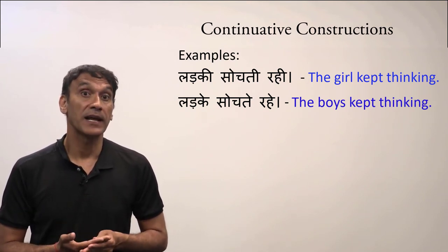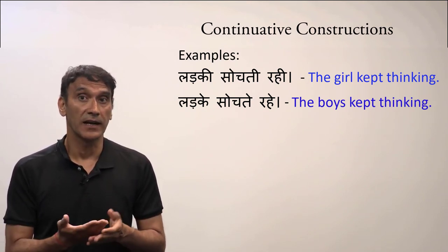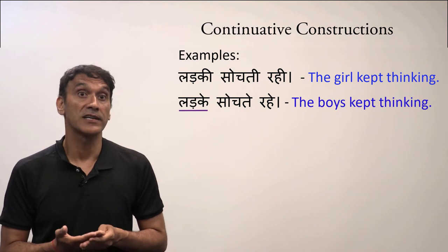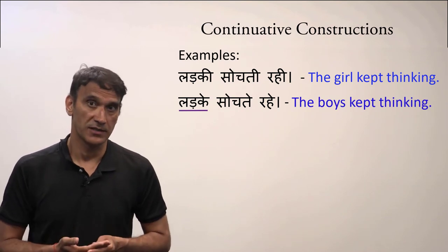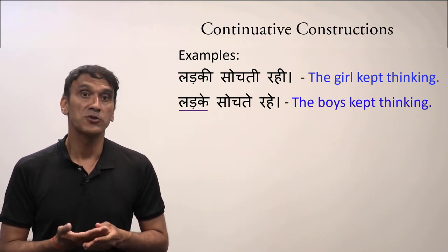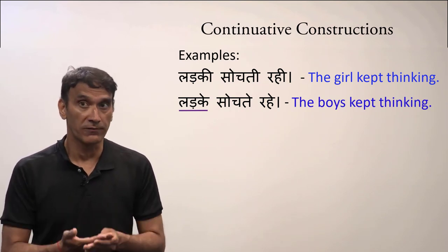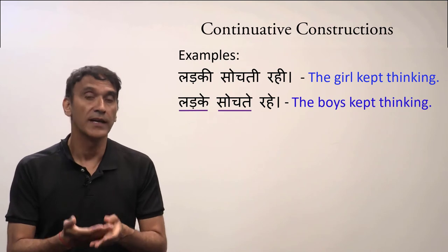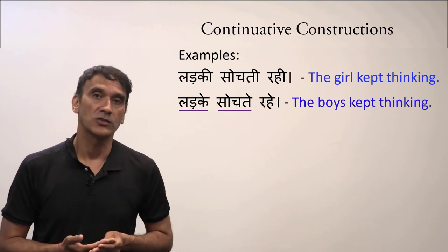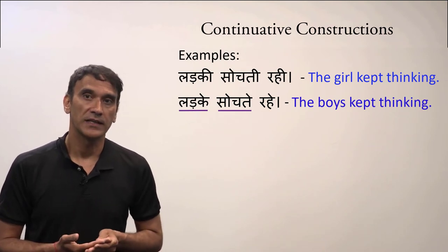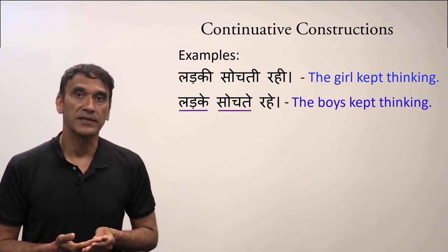In the second example, the subject LADKE is a masculine plural subject, so the habitual participle takes the masculine plural form: SOCHTE. LADKE SOCHTE RAHE — the boys kept thinking.